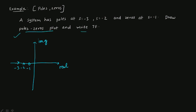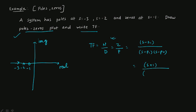Now we write the transfer function as numerator over denominator, where the numerator corresponds to zeros and the denominator to poles. It is written as (s - z1) / [(s - p1)(s - p2)]. Since z1 = -1, the numerator becomes (s + 1). Since the poles are -2 and -3, the denominator becomes (s + 2)(s + 3). So the transfer function is (s + 1) / [(s + 3)(s + 2)]. Now tell me in the comments whether this system is stable or not!